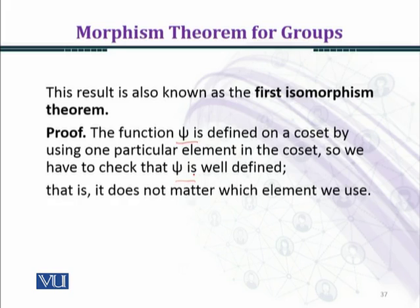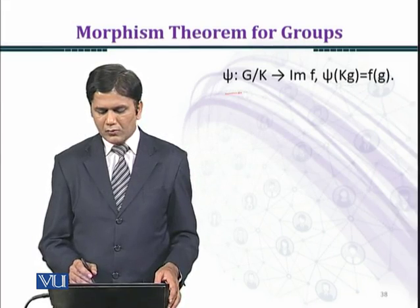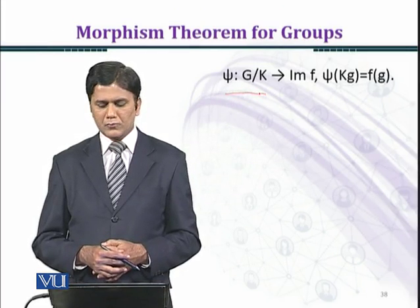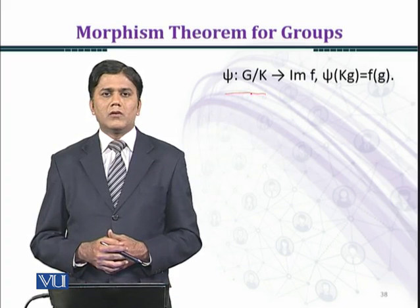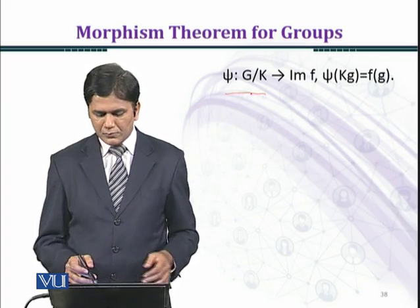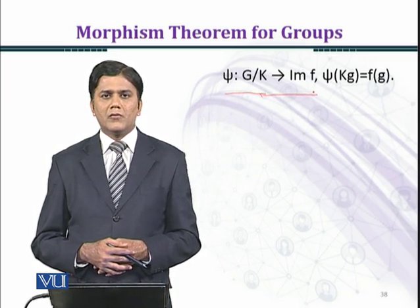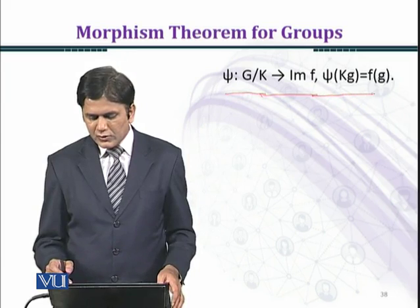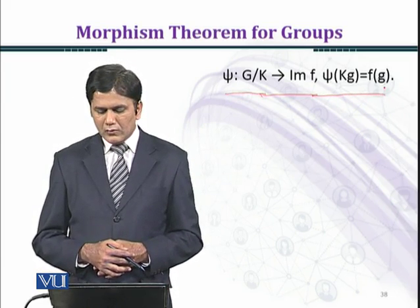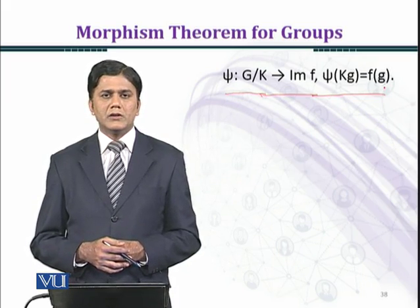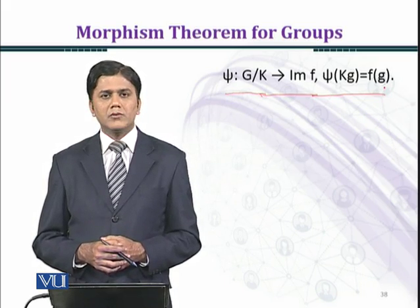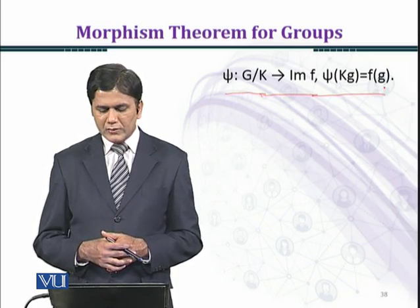That is, it doesn't matter which element we use. The map psi goes from the quotient group G over K — because K is the normal subgroup of G, G over K is a quotient group — to the image of F, where F is a morphism from G to H. Psi is defined by psi(KG) equal to F(G), taking input KG, the right coset as an element of G over K, mapping it to the image of G under F.